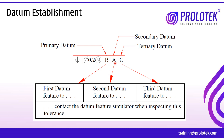A will be the second datum feature which will come in contact with the datum feature simulator. The fifth compartment has C, which is the tertiary datum — it has third priority. So that would be the third datum feature which will come in contact with the datum feature simulator.